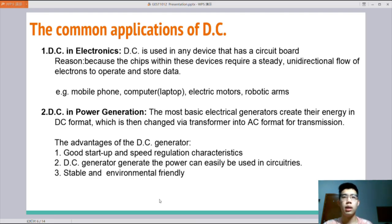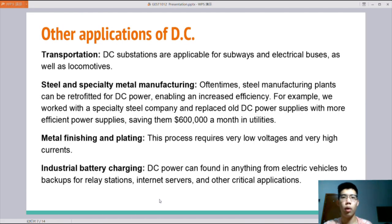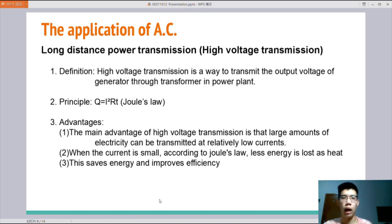The second one is the DC generator. Although it's not as common compared to AC generators, there are still several advantages of this kind of generator. They have good start-up and speed regulation characteristics. They can generate power that can be easily used in circuits and most importantly, they are stable and environmental friendly. Other applications like low voltage DC used in transportation, steel and specialty metal manufacturing, metal finishing and plating, industrial battery charging also can be found in our lives.